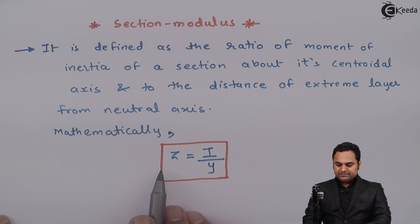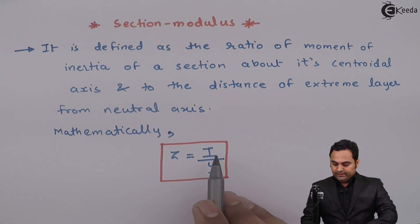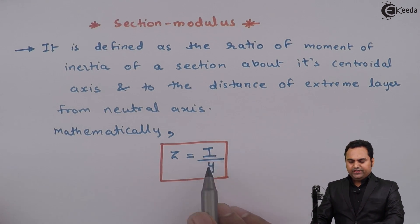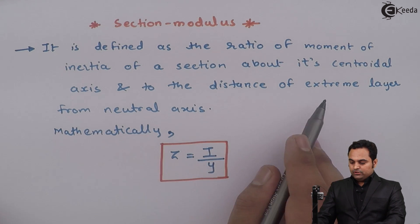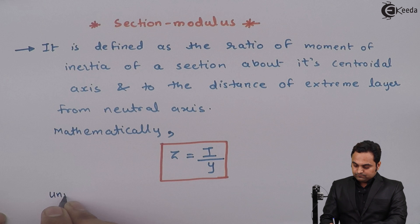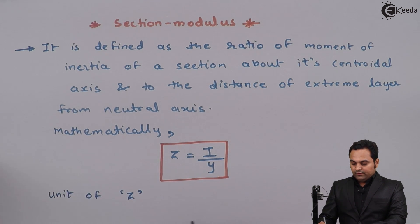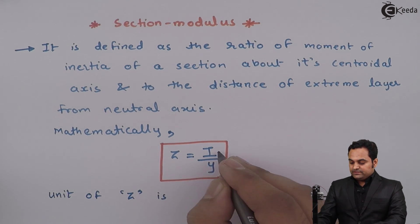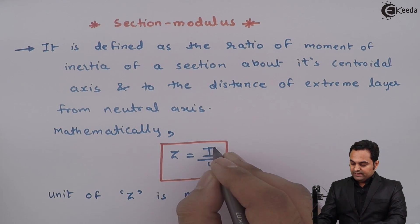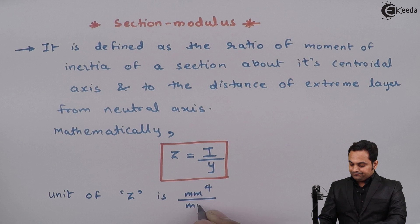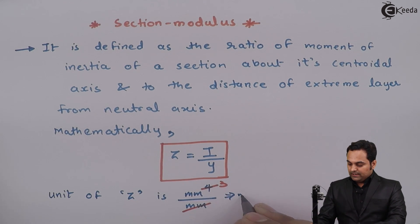Here, Z = I / Y, where I is the moment of inertia of the section about any axis — it can be about XX or YY — and Y is the distance from that axis to the extreme most layer. The unit of section modulus is I divided by Y: if I is in mm⁴ and Y is in mm, one mm cancels, giving units of mm³, cm³, or m³.